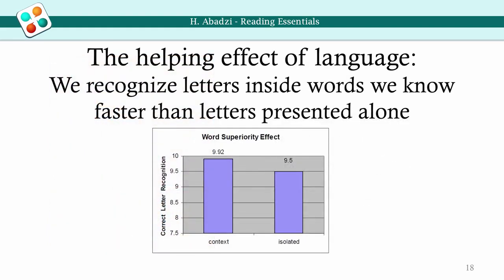People recognize letters presented briefly within words faster than they recognize isolated letters and letters presented within non-words. This is a sign of automaticity. To obtain this effect, the students ought to know the language they are reading. However, the effect is rather modest — knowing words helps predict how they will end, but automaticity in recognizing letter combinations seems more important.